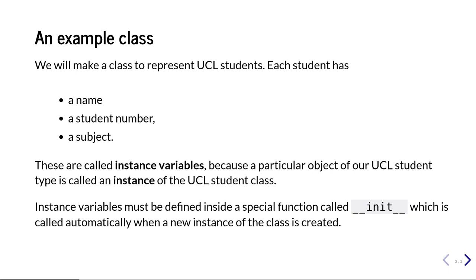Each UCL student object — each object whose type is our new class — will have these three instance variables representing their name, student number, and subject. Inside the class definition, in order to create these instance variables, you have to define a special function called __init__. That function is called automatically every time somebody creates a new instance of our class, and its job is to set up the instance variables using the values supplied by the person creating the new UCL student.